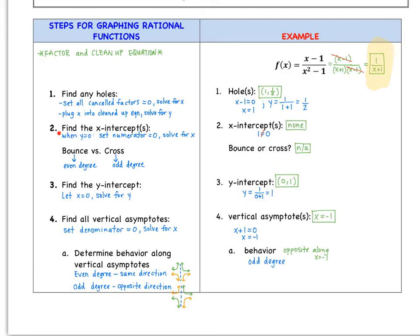Next, we find x-intercepts — that's when y = 0. We set the numerator equal to 0 and solve for x. The numerator of our cleaned-up version is 1, so we set 1 = 0. Because this is a false statement, there is no x-intercept. If there were an x in the numerator, we'd solve for it. Regarding bouncing vs. crossing: it bounces if the factor's degree is even, and crosses if the degree is odd. Since there's no x-intercept here, this doesn't apply.